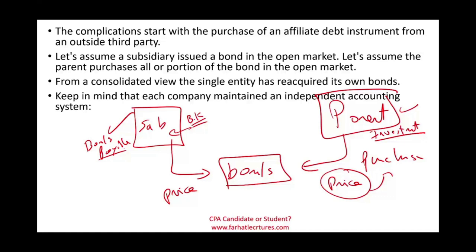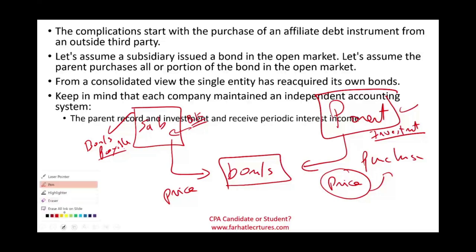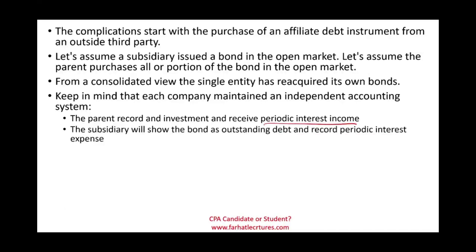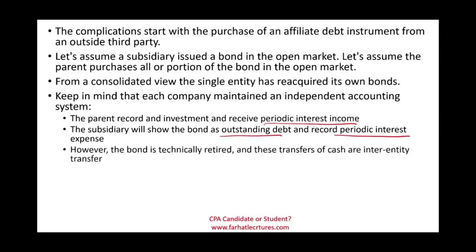There might be no reciprocity between the two amounts. The parent records the investment and receives periodic interest income. The sub shows the bond as outstanding debt and records periodic interest expense based on the initial selling price. However, the bond is technically retired when we do consolidation — the transfer of cash is basically an inter-entity transfer and cancels out easily.